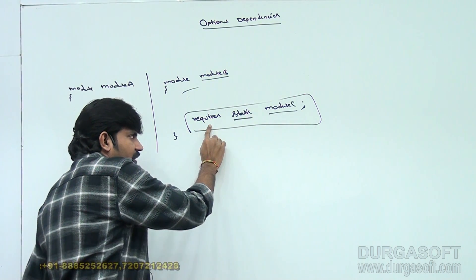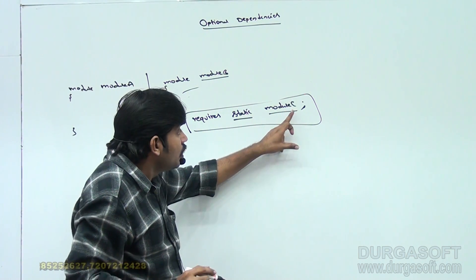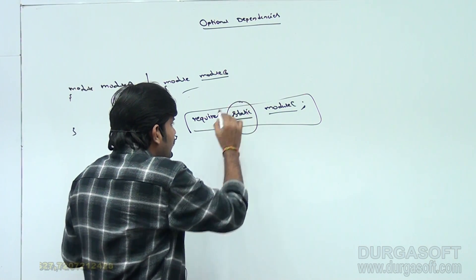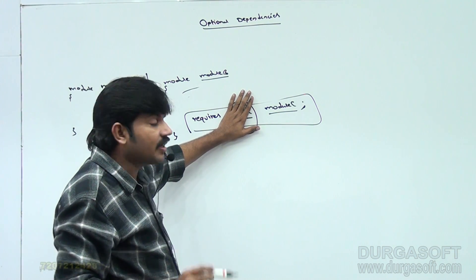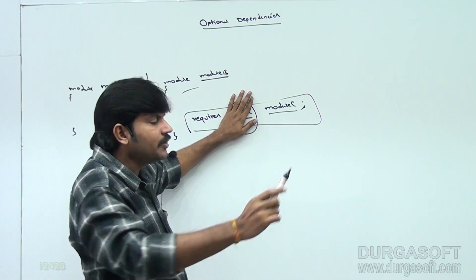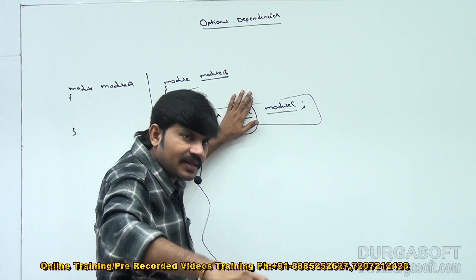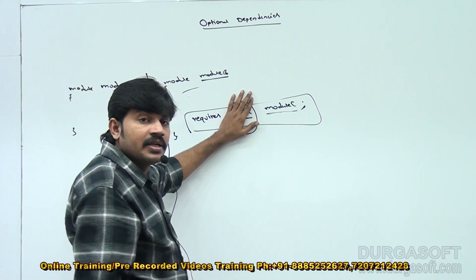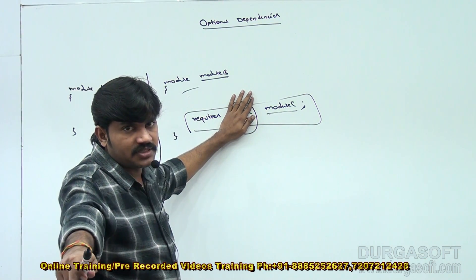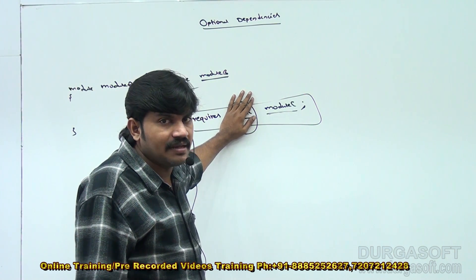If `static` is not there — just `requires module C` — then at compile time, module C must be required, and at runtime, module C must also be required. So dependency check is mandatory at both compile time and runtime.